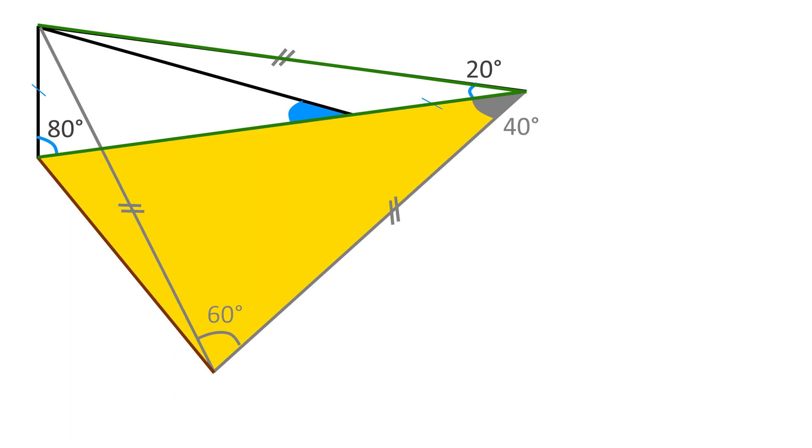This means this yellow triangle is also an isosceles. Therefore, this angle is 180 minus 40, then divide by 2, giving 70 degrees.